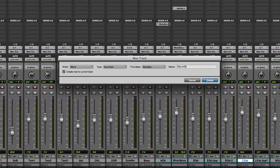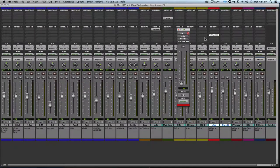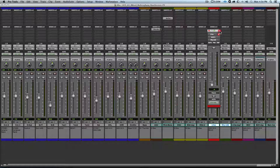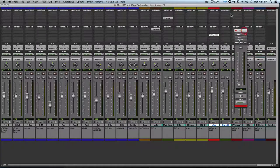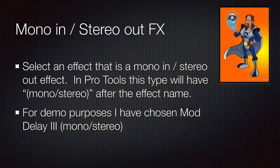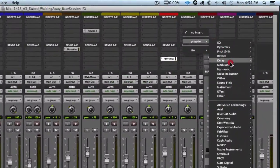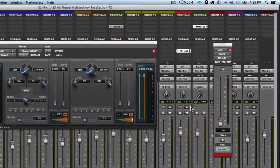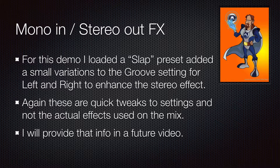We'll hit Create and our aux appears. We'll move the send out of the way, and next we will put a plug-in on the aux input track. We'll be looking for a plug-in that has 'mono/stereo' in parentheses after its name — this will accept a mono input and output a stereo signal. For this demo I'm loading up a mod delay with a quick slap using a little different groove for the left and right to create a stereo effect.